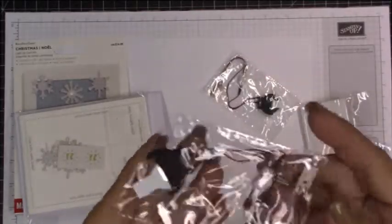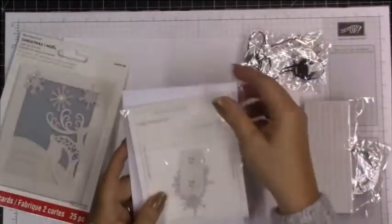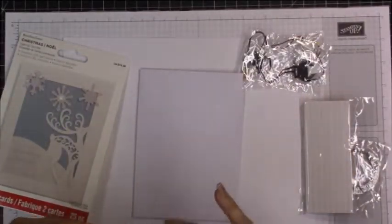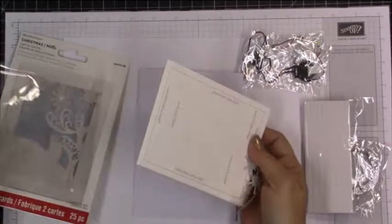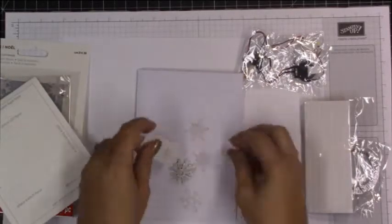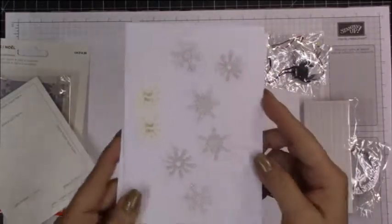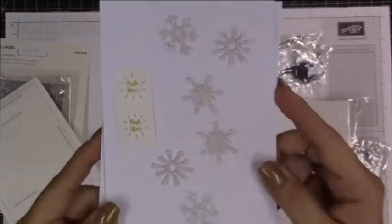You have two light units which are basically already pre-made so they're already all put together. You don't have to do anything, there's no coil or any tapes like that you have to work with. These are the little embellishments and a push here sticker.